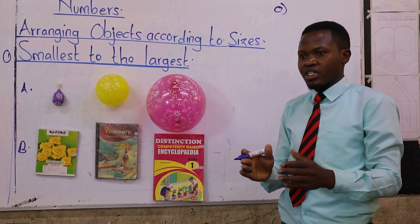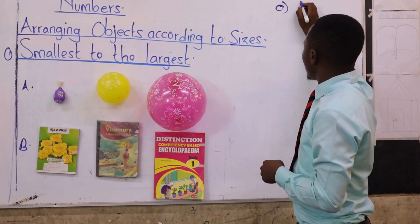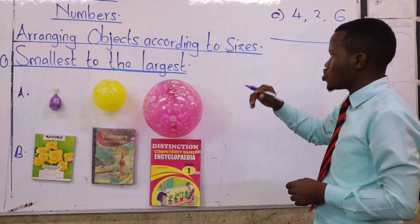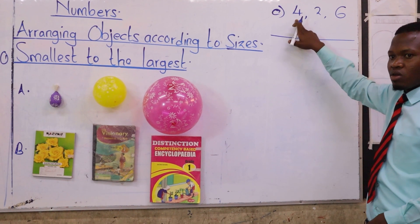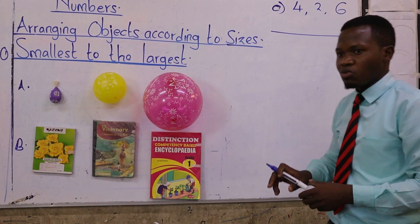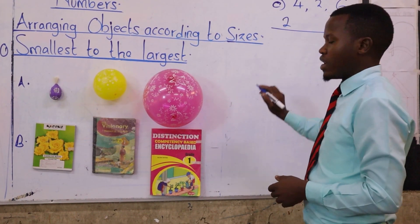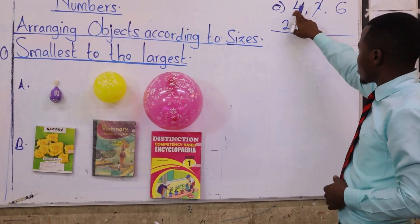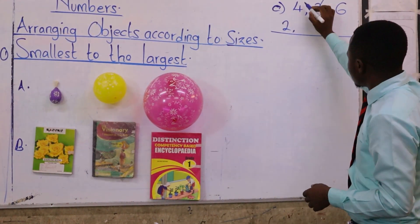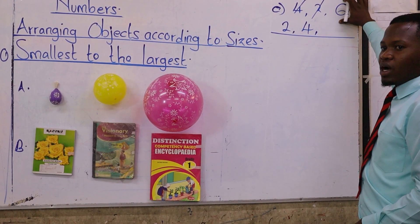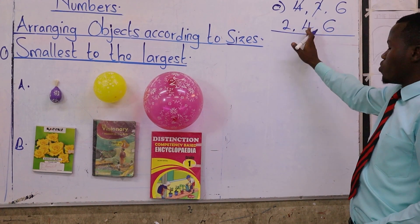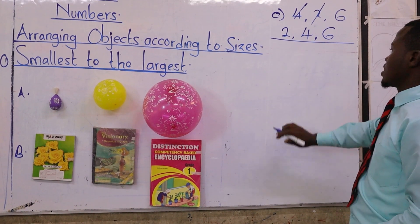In the exam you can also be given different numbers, from number one up to number ten. For example: you are given number four, number two, and number six, and you need to arrange from smallest to biggest. Which number is the smallest? Two — very good. So you write number two first, then between number four and number six, the smaller is four. So the arrangement is: two, four, six.